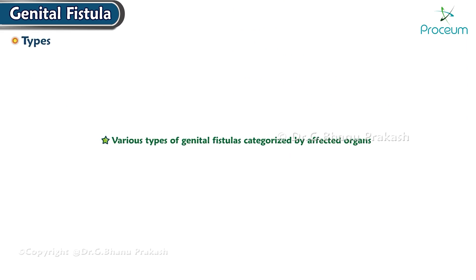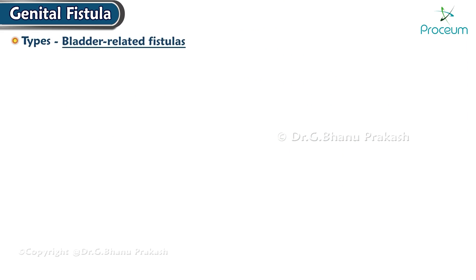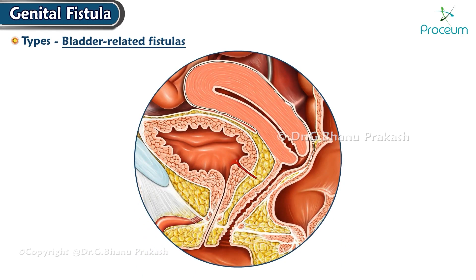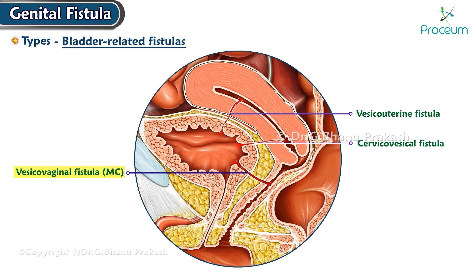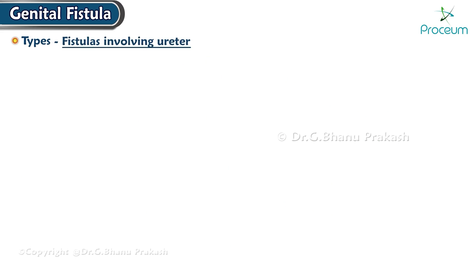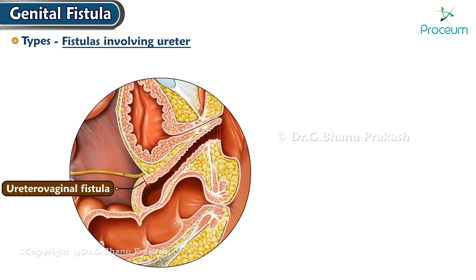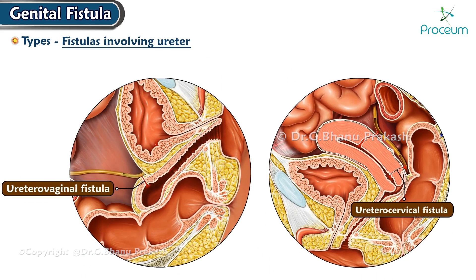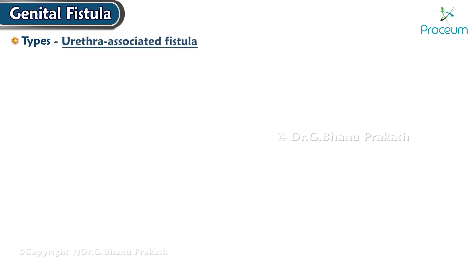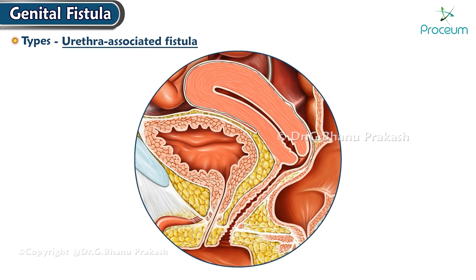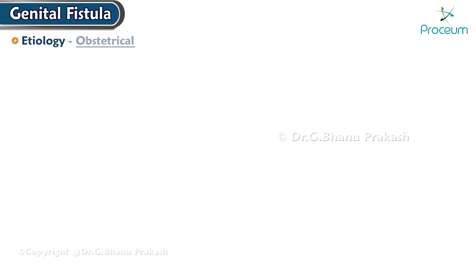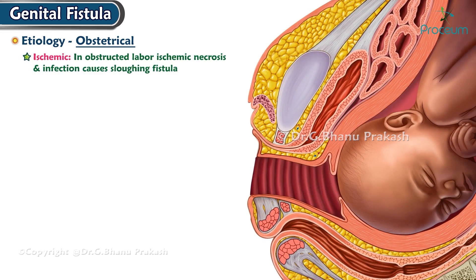Types: Various types of genital fistulas are characterized by the affected organs. Bladder-related fistulas include vesicovaginal fistula — the most common type — vesicouterine fistula, and cervicovesical fistula. Fistulas involving the ureter comprise ureterovaginal fistula, ureterocervical fistula, and ureterouterine fistula. Urethra-associated fistula is represented by urethrovaginal fistula.